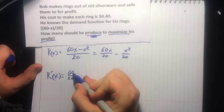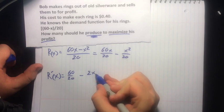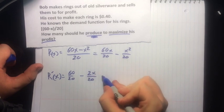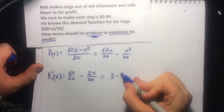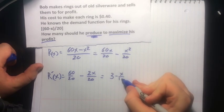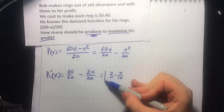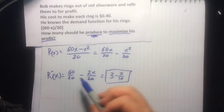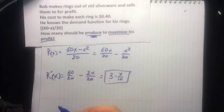I have 60 over 20. And then our x² here becomes 2x, also over 20. This simplifies to 3 minus x/10. And this is R', which is what they're going to call the marginal revenue.